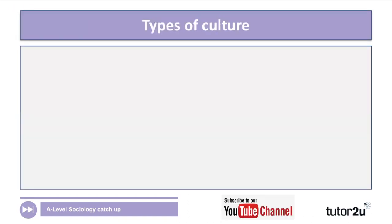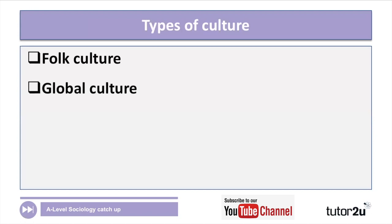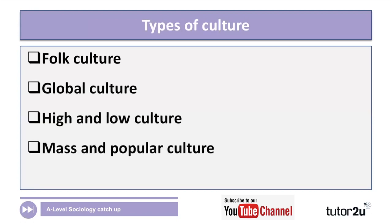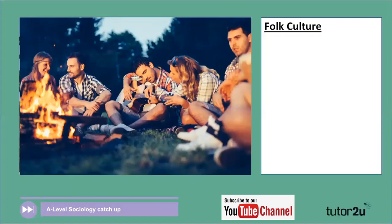We're going to think about five different types of culture. As I run through these, you can think about which ones you already know or which ones you need a refresher on. We have folk culture, global culture, high and low culture, mass and popular culture, and subcultures. Let's do them in order — let's start with folk culture.